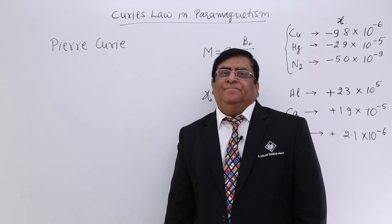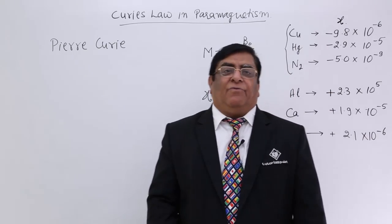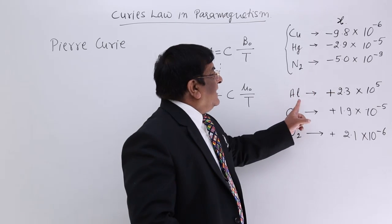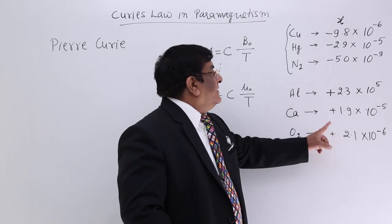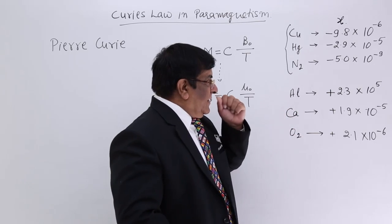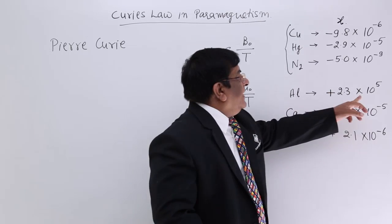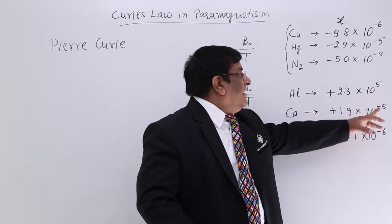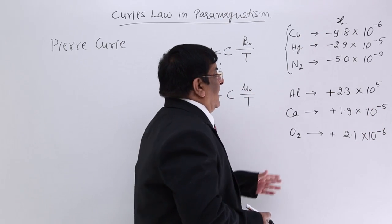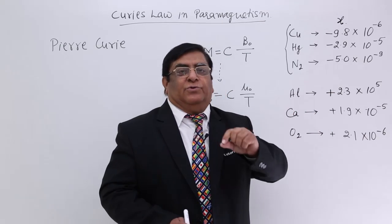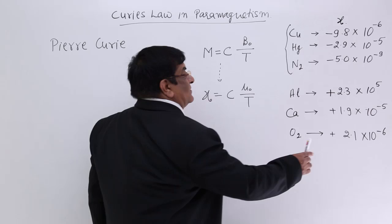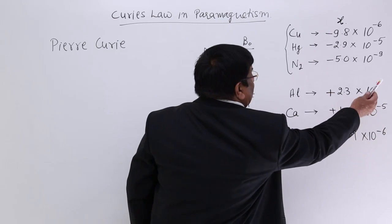In paramagnetic material, when psi is positive, all these materials are paramagnetic materials. The value of psi is on the order of 10 to the power minus 5, and the same will be the value of mu_r, because mu_r is equal to 1 plus psi. So that is in the range of 10 to the power minus 5.